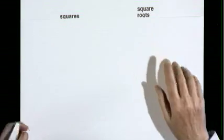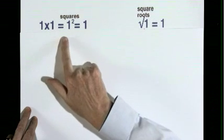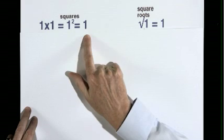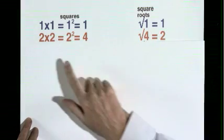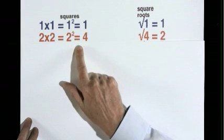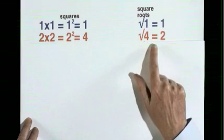Squares and Square Roots. 1 times 1 is 1 squared equals 1. The square root of 1 is 1. 2 times 2 is 2 squared makes 4. Square root of 4 is 2.